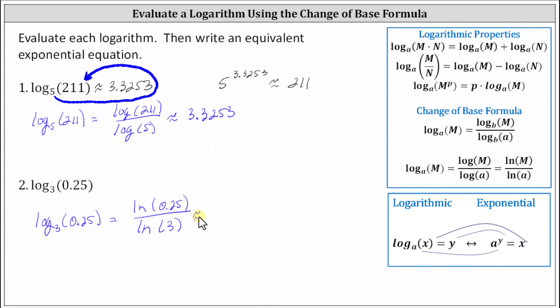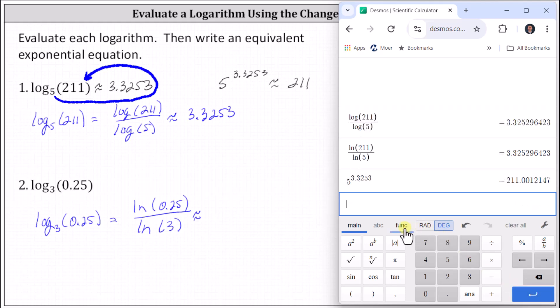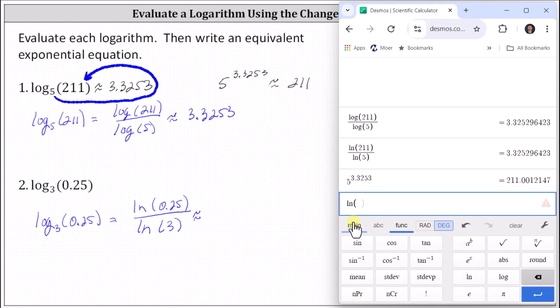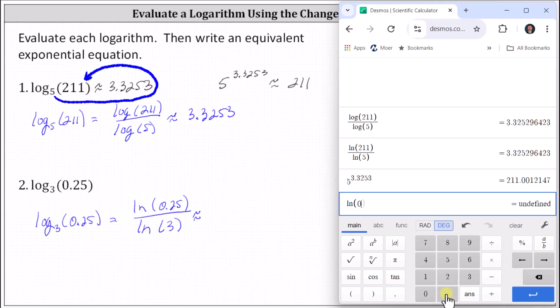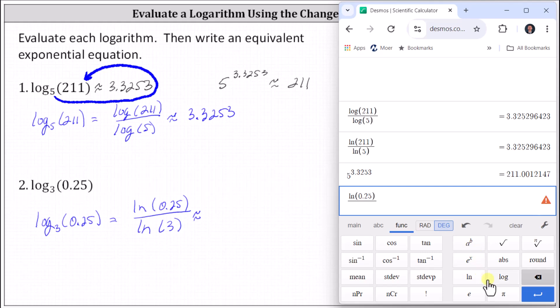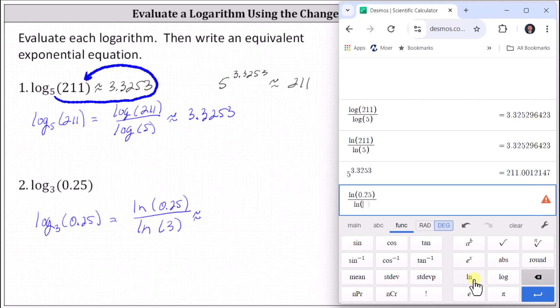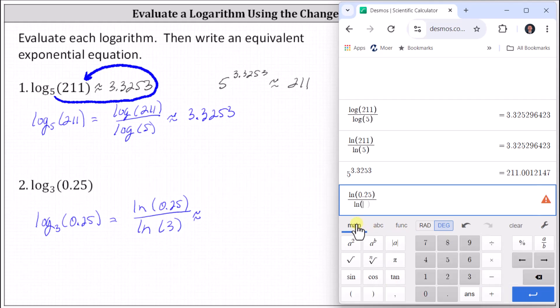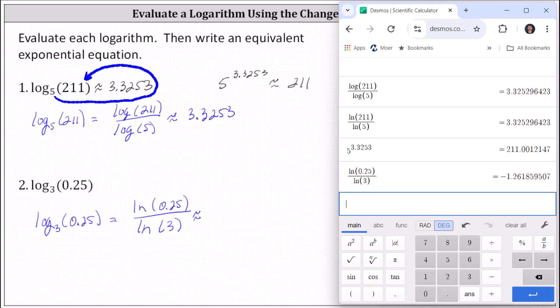And now we'll go to the calculator and round to four decimal places. Functions, natural log, main, 0.25, close parenthesis, divided by Functions, natural log, main tab, three, close parenthesis, and enter. To four decimal places we have negative 1.2619.